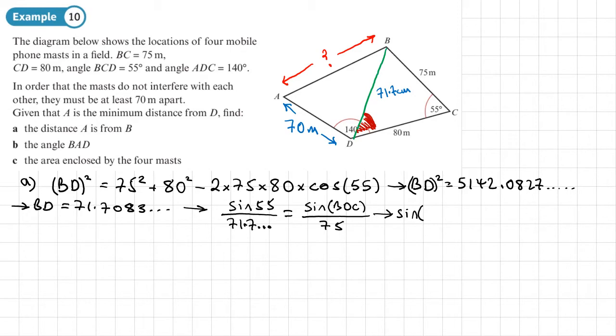So if we type this in our calculator, we actually get sine of angle BDC equal to 0.8567. So I'm going to do the sine inverse of that and get angle BDC as 58.9540 dot dot dot. So that's the size of this angle here, so I'll put that in on my diagram. So 58.95, I'll just put 0.9.